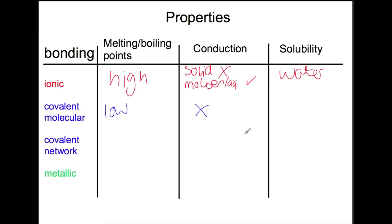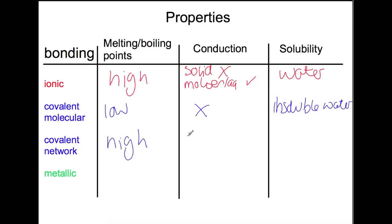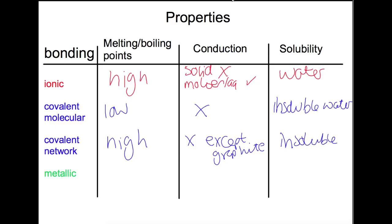Covalent molecules never conduct — there are no free charges to carry the current — and they tend to be insoluble in water, however they can be soluble in other non-polar solvents. Covalent networks have very high melting and boiling points because you are breaking covalent bonds when melting — there are many covalent bonds to be broken, so this needs a lot of energy. They don't conduct because there are no free charges, except for graphite, and they are insoluble. Finally, metallic bonding: melting and boiling points tend to be quite high, apart from mercury which is a liquid at room temperature. Metals always conduct and they are insoluble.